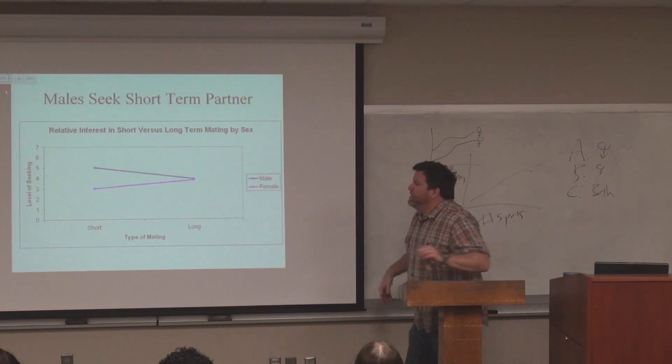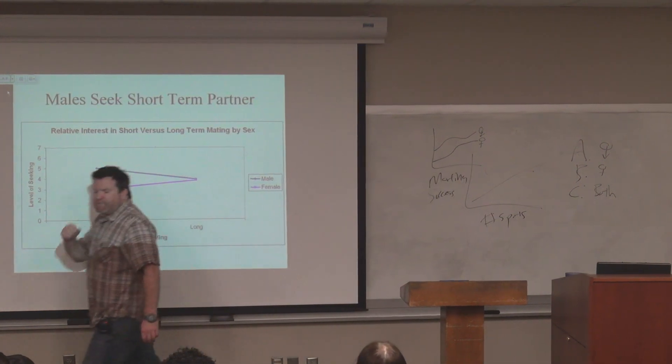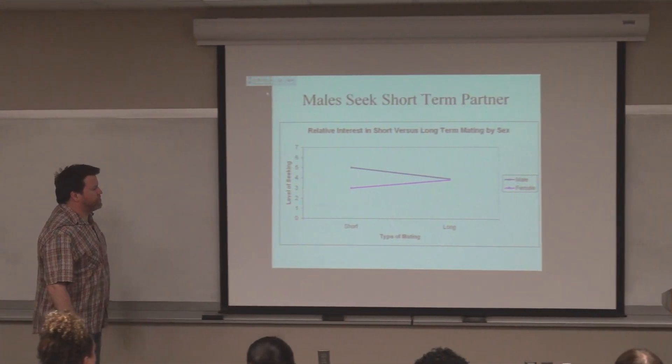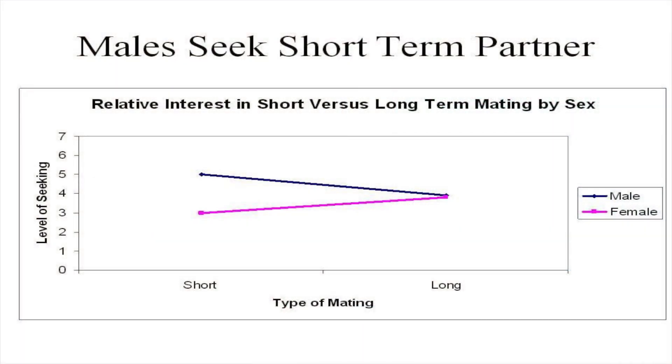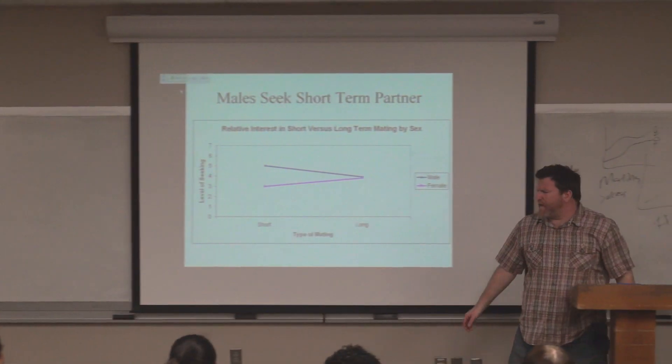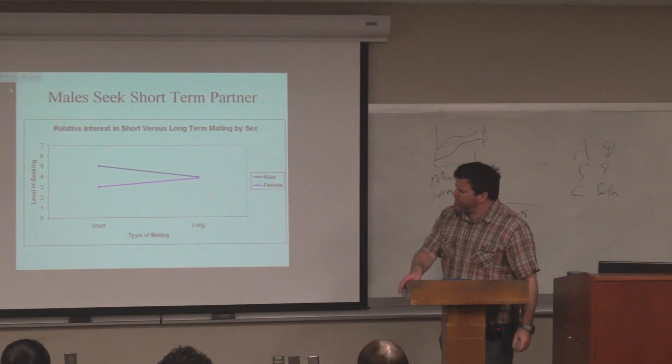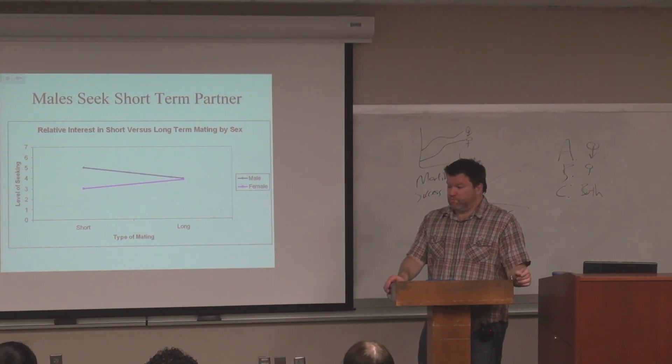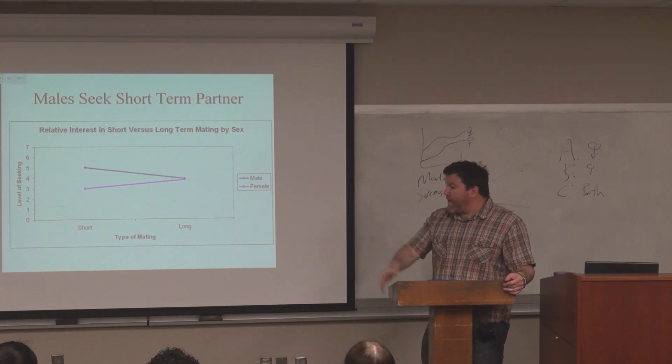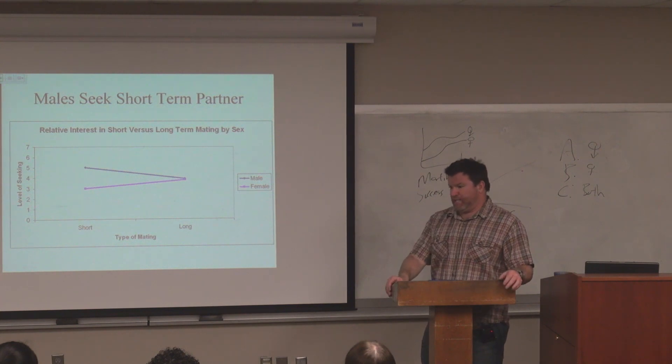So this study, they asked males and females their relative interest in short term mating. Obviously females didn't say they were not interested at all and males were not up here. But might there be social reasons that females might say less likely than males?